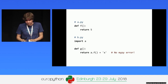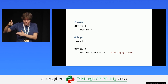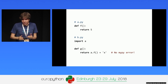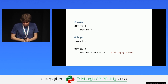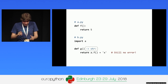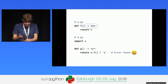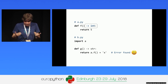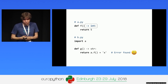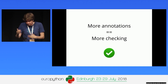Mypy doesn't type check functions without annotations to make gradual typing easier. Large legacy code bases can generate hundreds of warnings if you try to type check everything at once. Even if you annotate one side, if the called function has no annotation, mypy still doesn't know what it returns and can't catch the error. Only when both sides are annotated can mypy find the issue. More annotations means more checking — that's the key thing to remember.